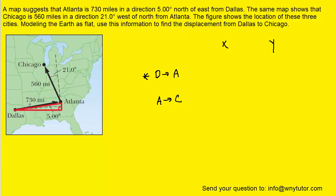In red, we have drawn that right triangle. The right angle would be right here. The hypotenuse of that right triangle is 730 miles, and this 730 miles can be broken up into X and Y components. The horizontal distance would be the X component, and the small vertical distance would be the Y component. We know that the cosine of an angle equals the adjacent side divided by the hypotenuse, and the angle here is 5 degrees — so cosine of 5 degrees equals X divided by 730.